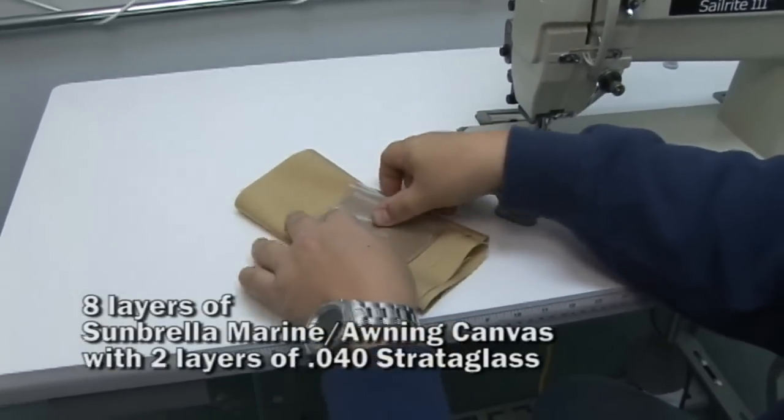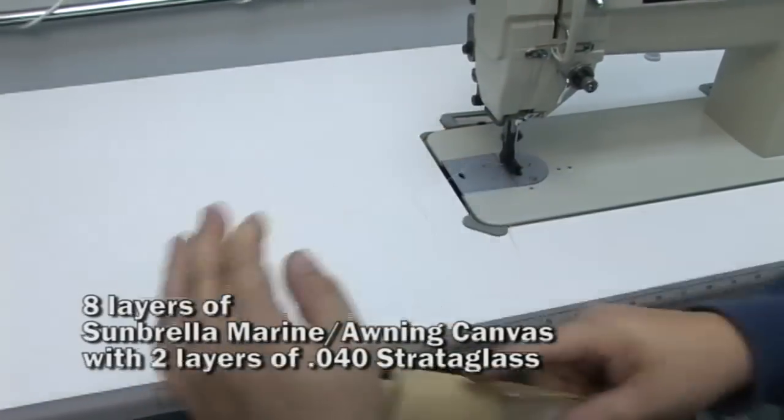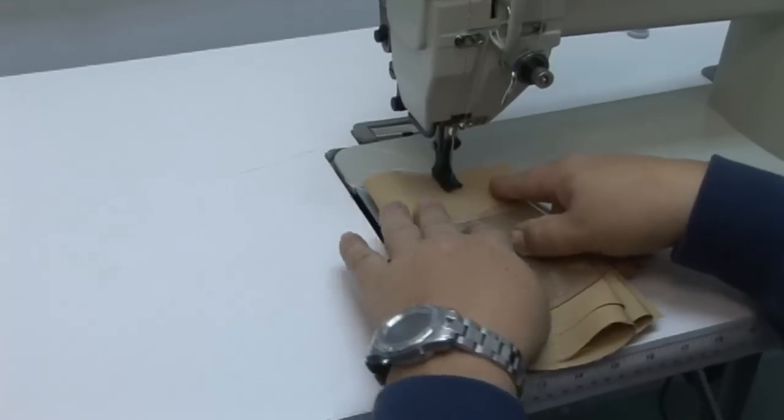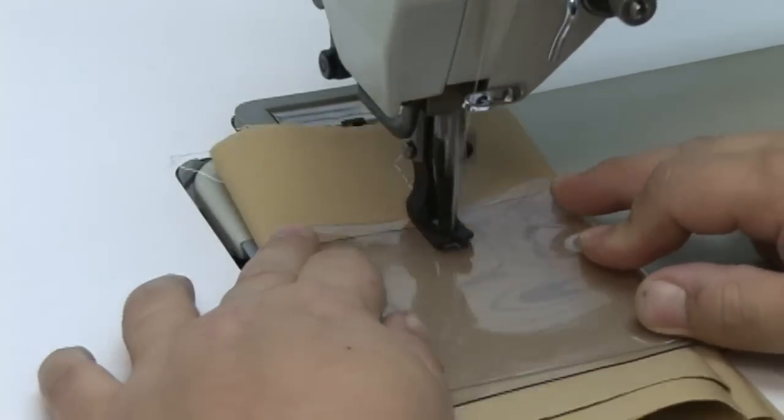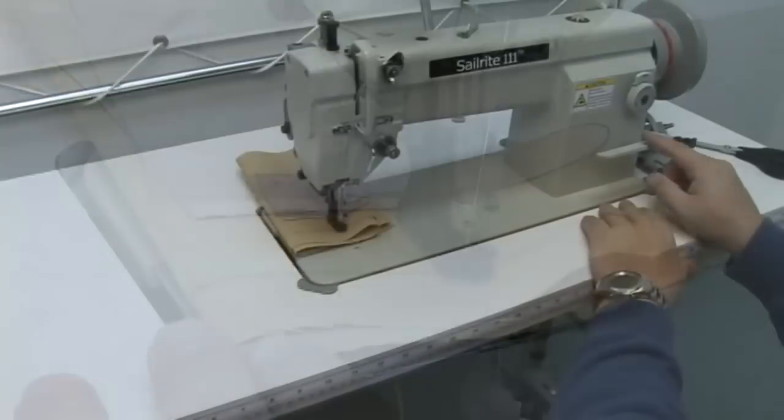Let's fold another 8 layer marine canvas assembly together and put this 40 gauge strata glass, which is a vinyl window material, folded twice into the assembly and let's sew through that. Punches right through.